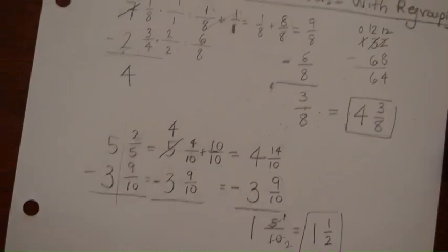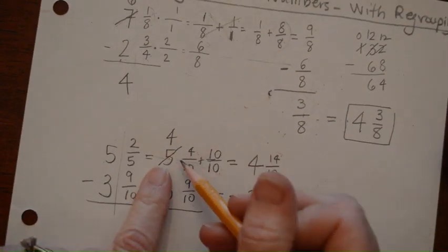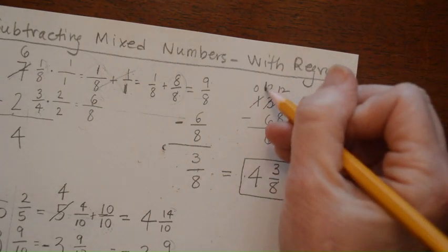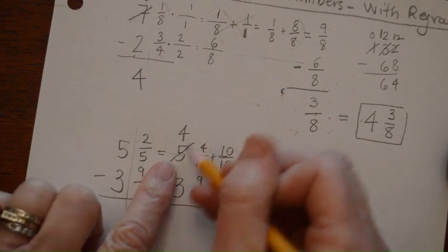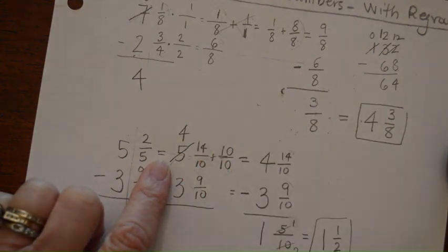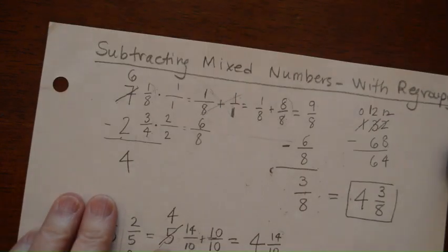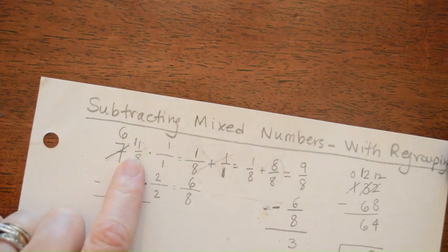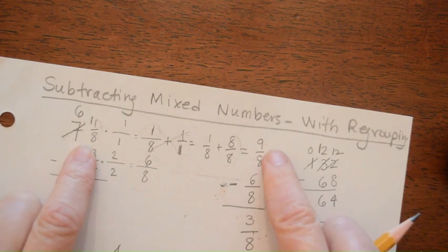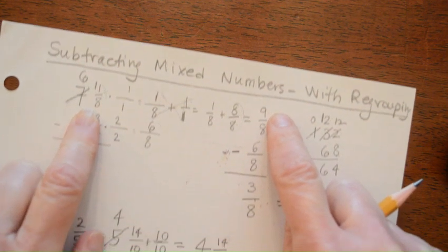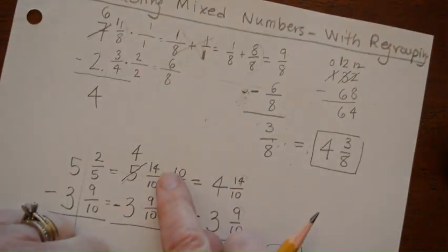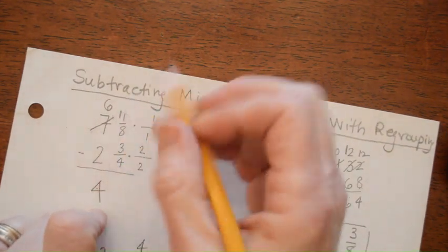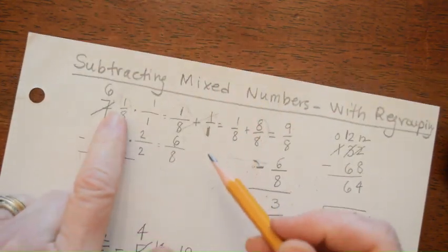Before we do one more, I want to point out a very common mistake. Just like in whole number subtraction where you cross out and put a 1 in the next column, some people think they can just cross out the 5, write a 4, and put a 1 right into the numerator. It happened to work in this particular case, but going back to the first problem — if I take 1 away from the 6 and just give it to the 1 in the numerator, I'd get 11 eighths, but we know it's equivalent to 9 eighths. That only worked with tenths by luck because the denominator was 10. In most cases, it will not work — so please do not just cross out and put a 1 in the numerator.